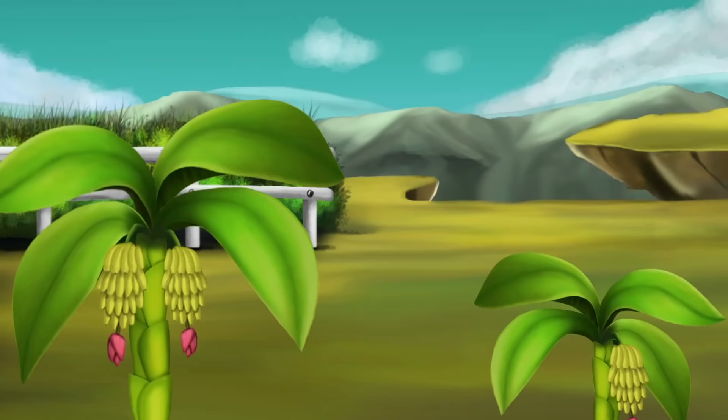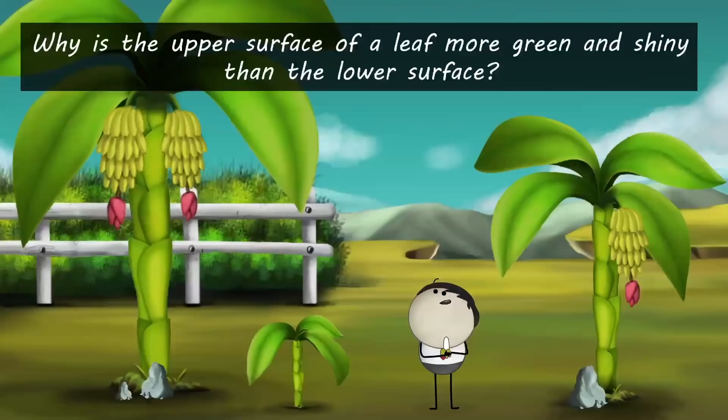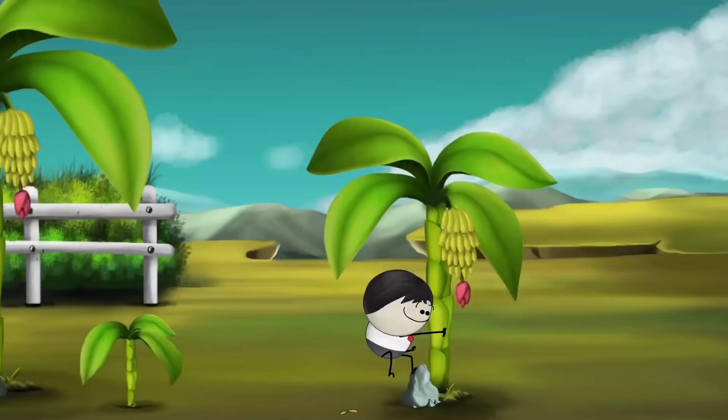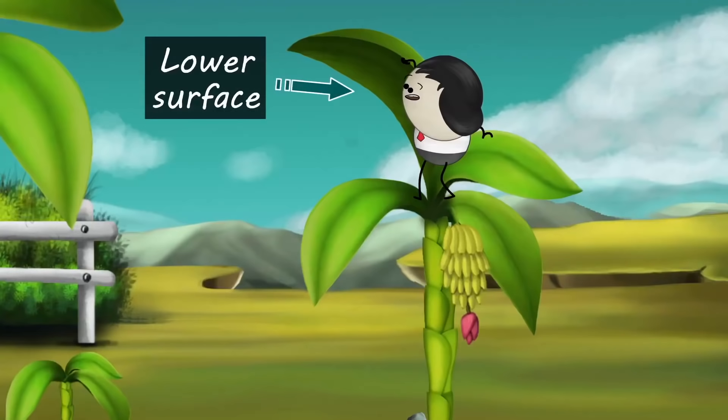Photosynthesis and Transpiration. Why is the upper surface of a leaf more green and shiny than the lower surface? The upper surface of a leaf is more green and shiny, while the lower surface is comparatively less green and shiny.